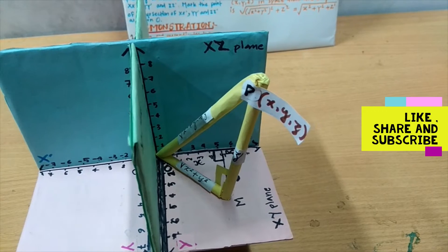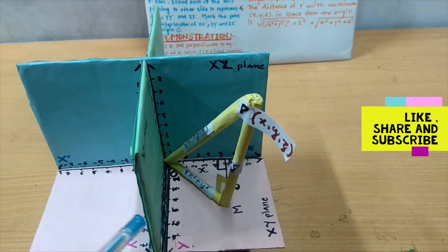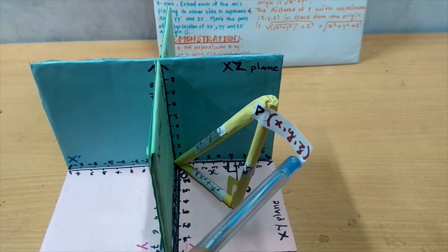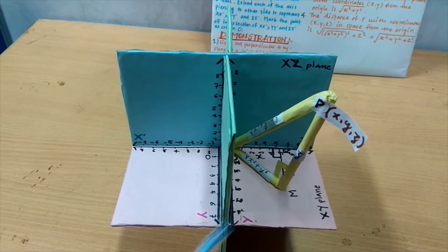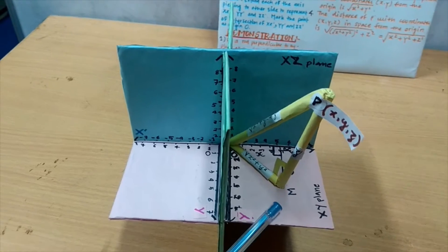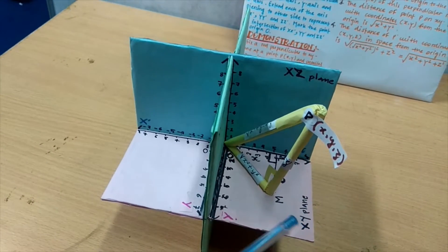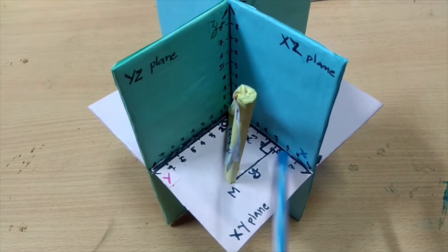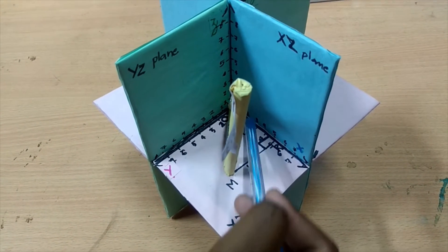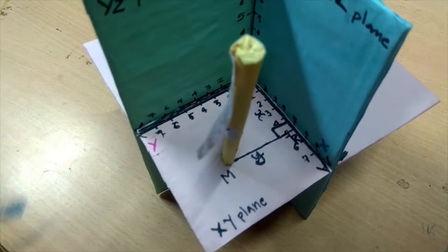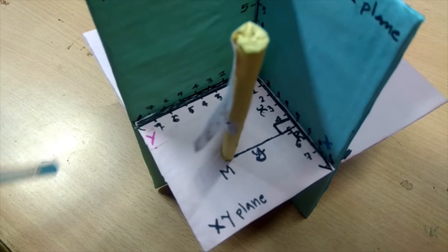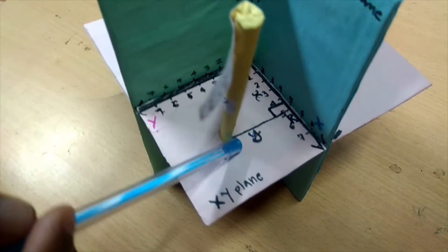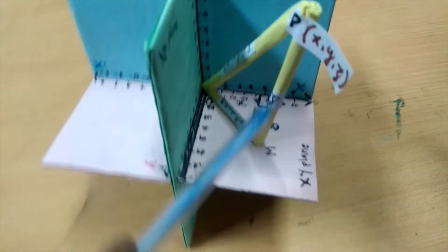P is a point in space and its coordinates is XYZ. We draw perpendicular on XY plane such as PM. From M, we draw perpendicular MR on X axis. Then this distance is X and this distance is Y and this distance is Z.